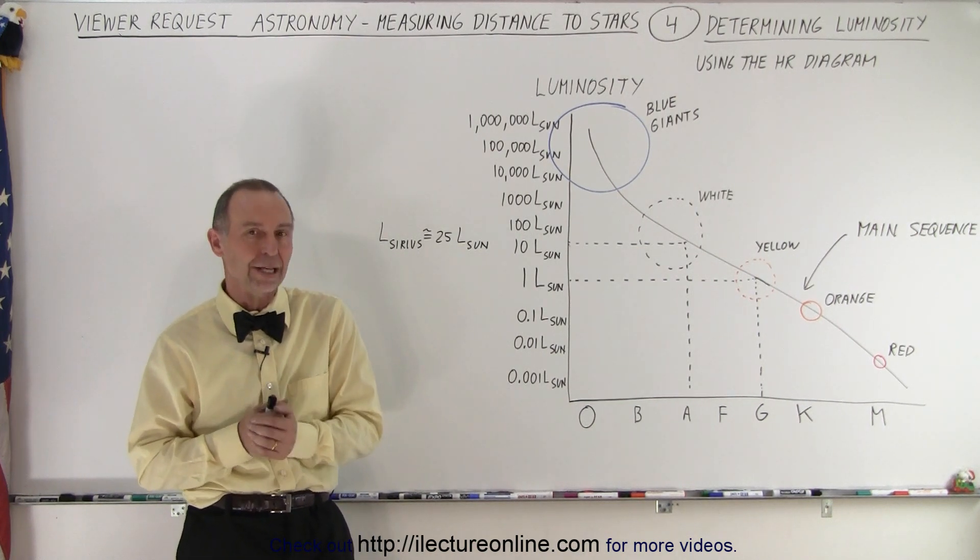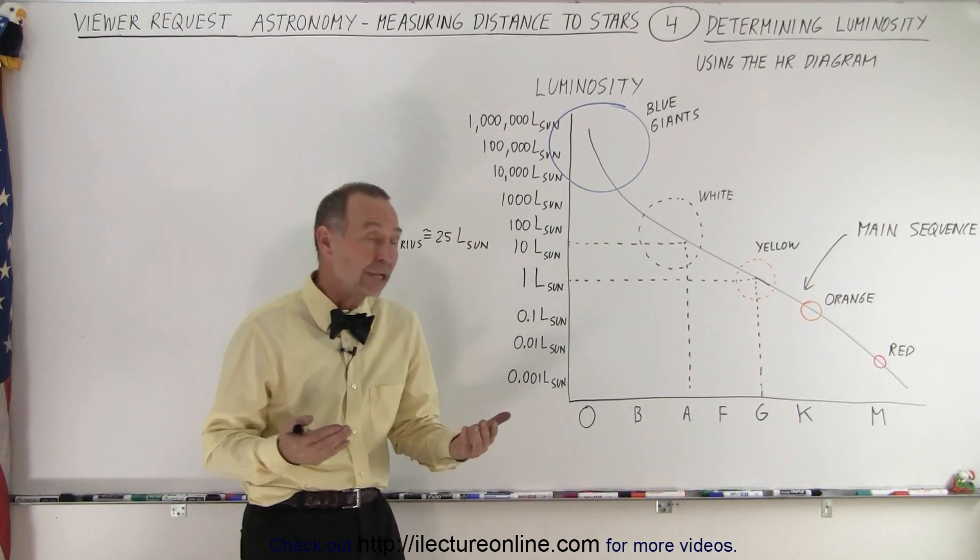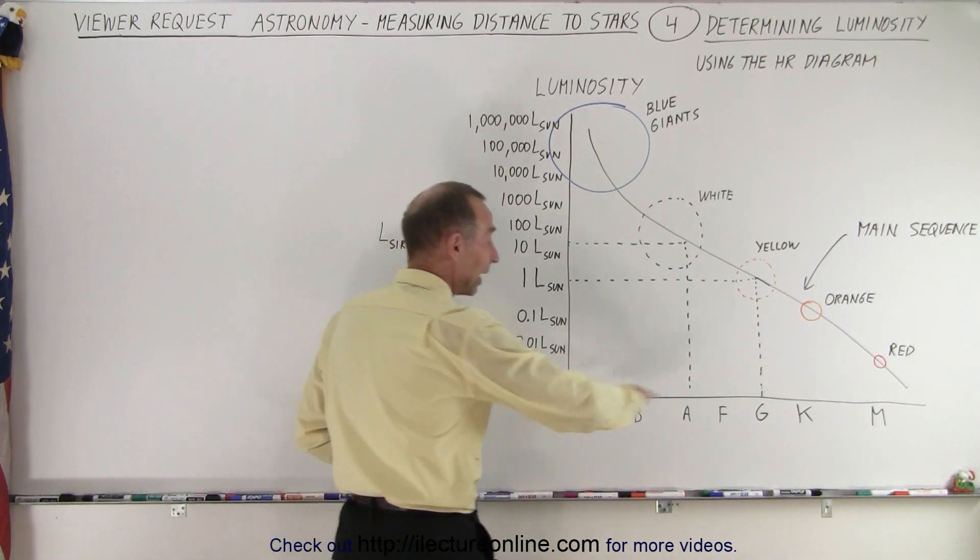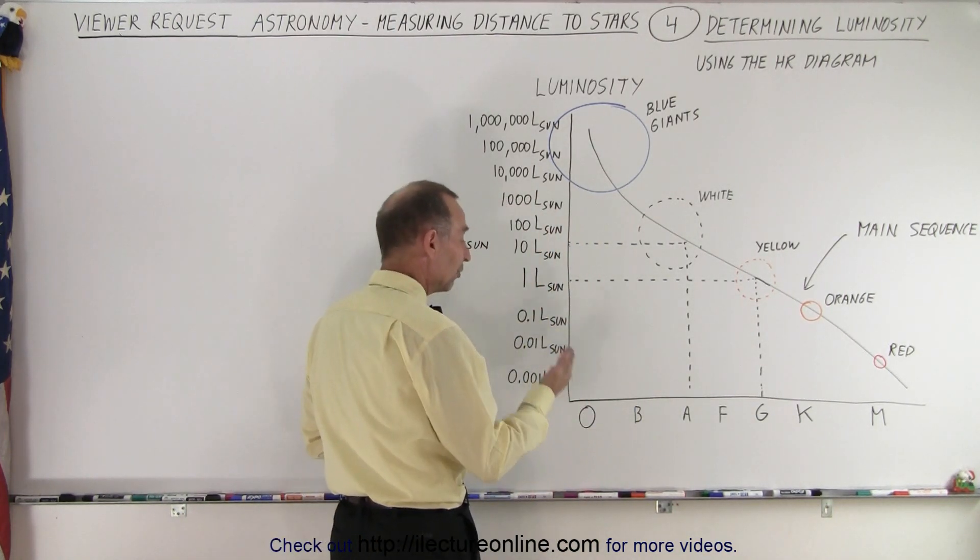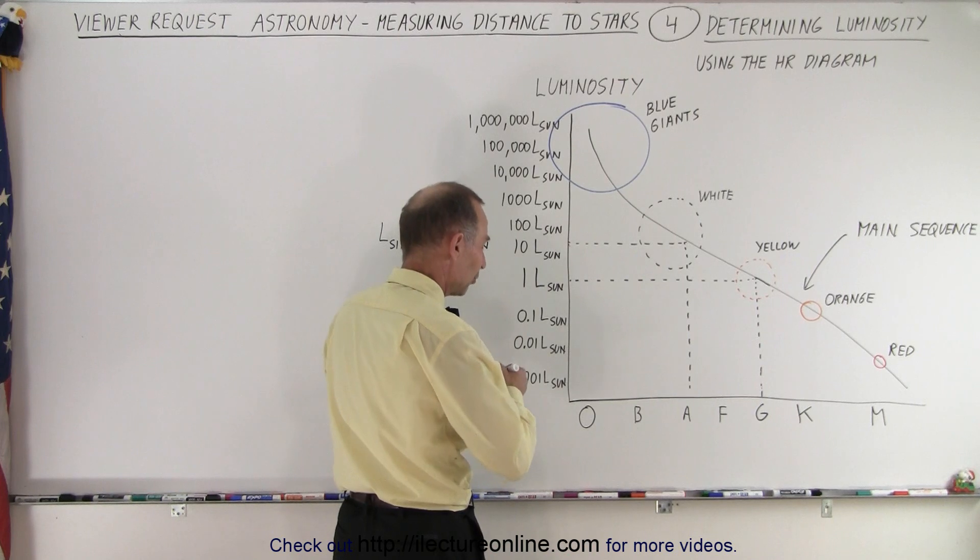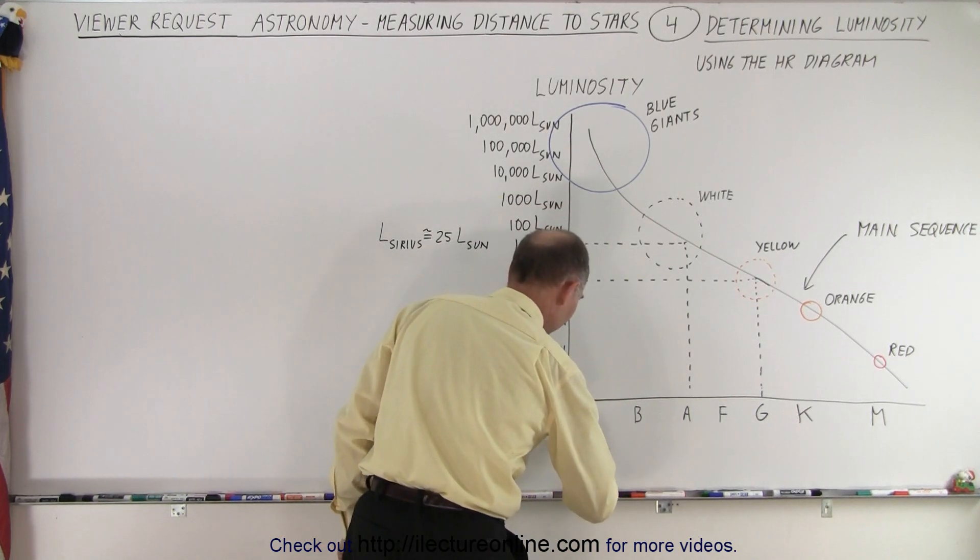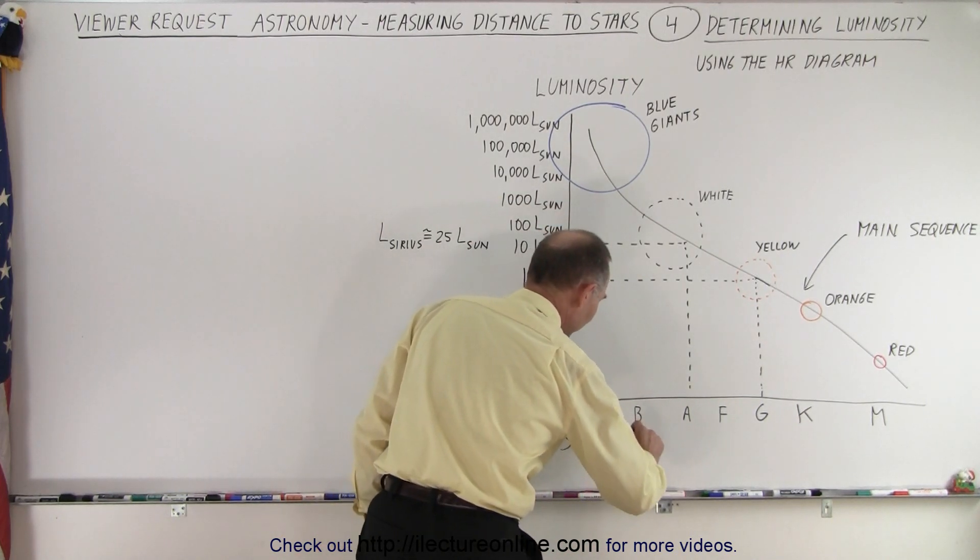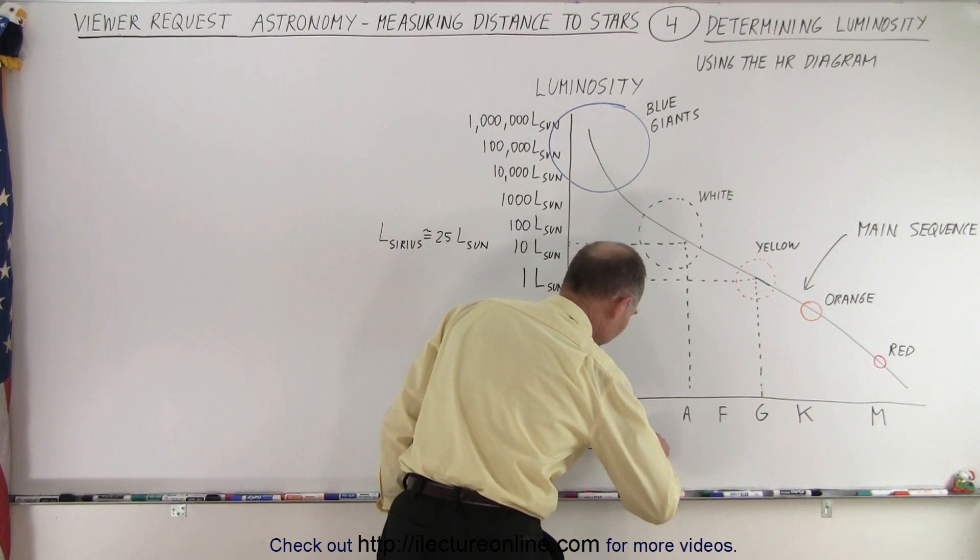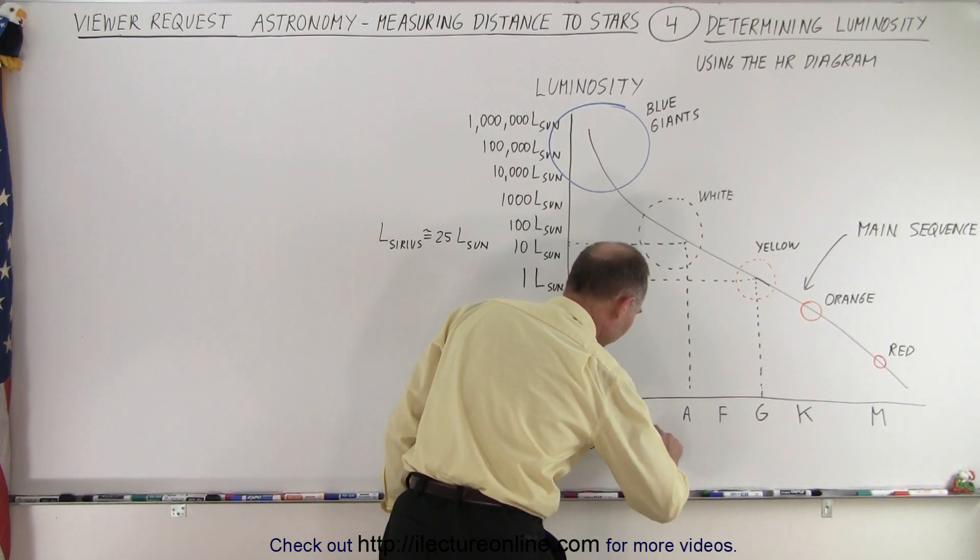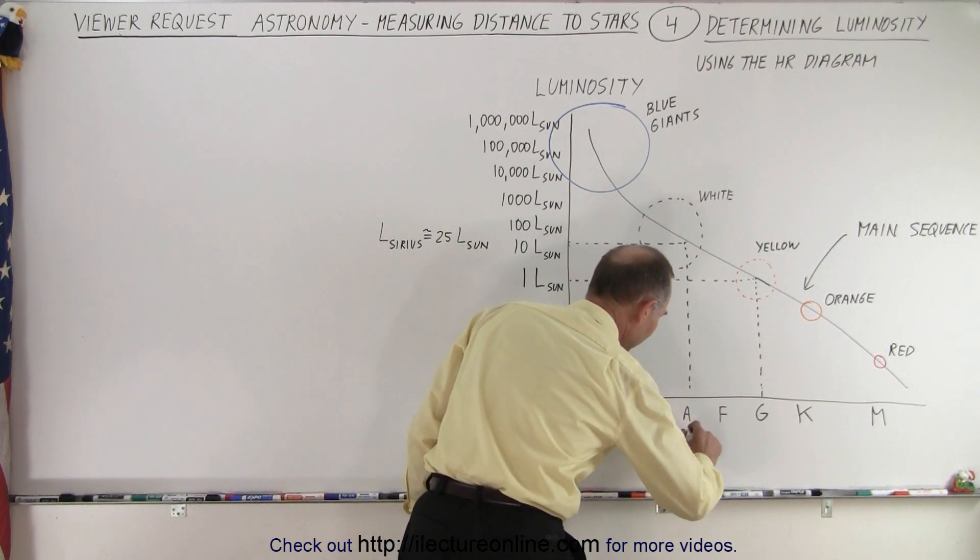And it turns out the HR diagram. So on the HR diagram on the horizontal axis we have temperature and spectral class. Now temperature for O type stars reaches about 30,000 Kelvin. For B it's about 20,000 Kelvin. For A it's about 10,000 Kelvin.